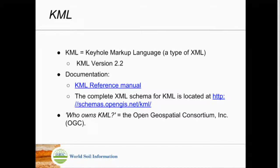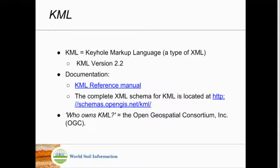KML is a type of XML. It was made by a small company which was later bought by Google, who further developed Google Earth. The schema is officially still used by Google Earth. The recent version of KML was 2.2, and there is a KML reference manual where you can look at all the elements.